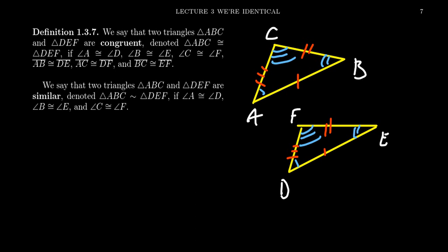Congruent triangles are essentially just the same triangle, but possibly in different locations in the plane. The difference between ABC and DEF is just translation — you could also throw reflections and rotations into the mix. But the two triangles are essentially the same, although they might be oriented differently in the plane.